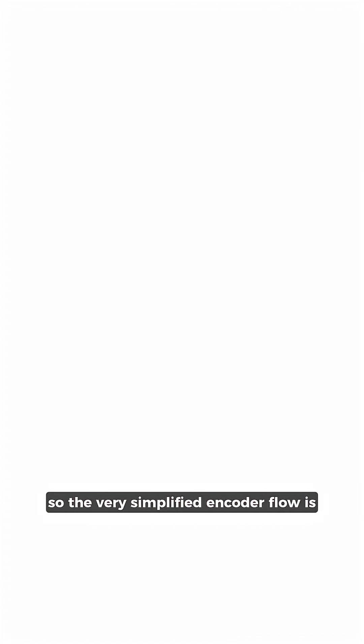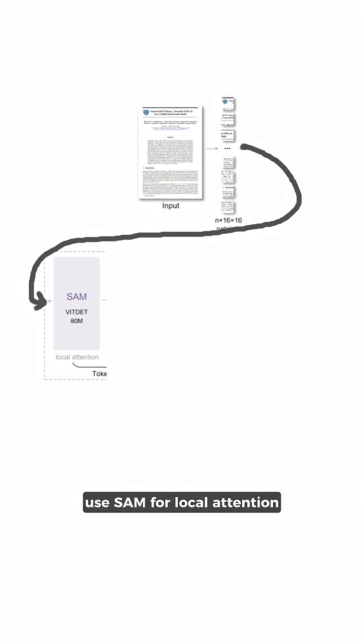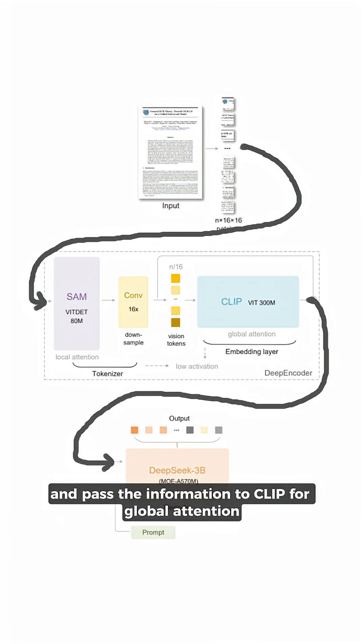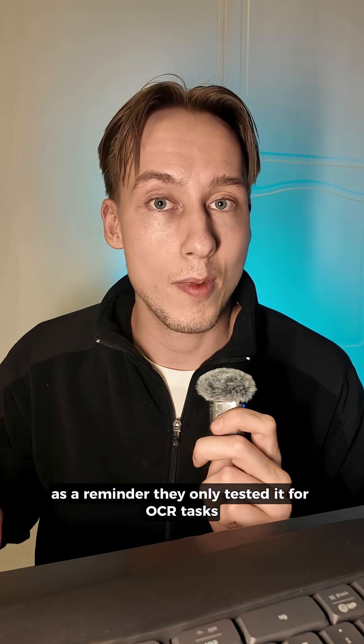The simplified encoder flow is: cut the image into patches, use SAM for local attention, compress the images using CNN, and pass the information to CLIP for global attention to work out what relates to what.